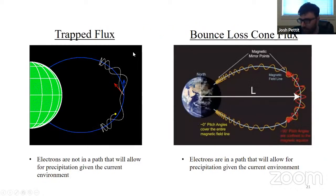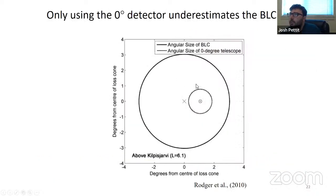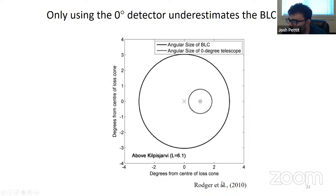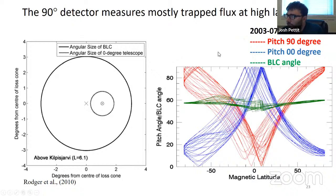There's an issue between differentiating trapped and bounce loss cone flux, or precipitating flux. One of the problems is that if you only use the zero-degree detector in POES, you underestimate the electron flux. This is a plot from Craig Rodger in 2010 — the dashed line shows what the zero-degree detector is measuring, and the solid line shows what the bounce loss cone size is, making clear that you'll underestimate this. But one of the problems with using the 90-degree detector is that it's measuring mostly trapped flux at these higher latitudes.